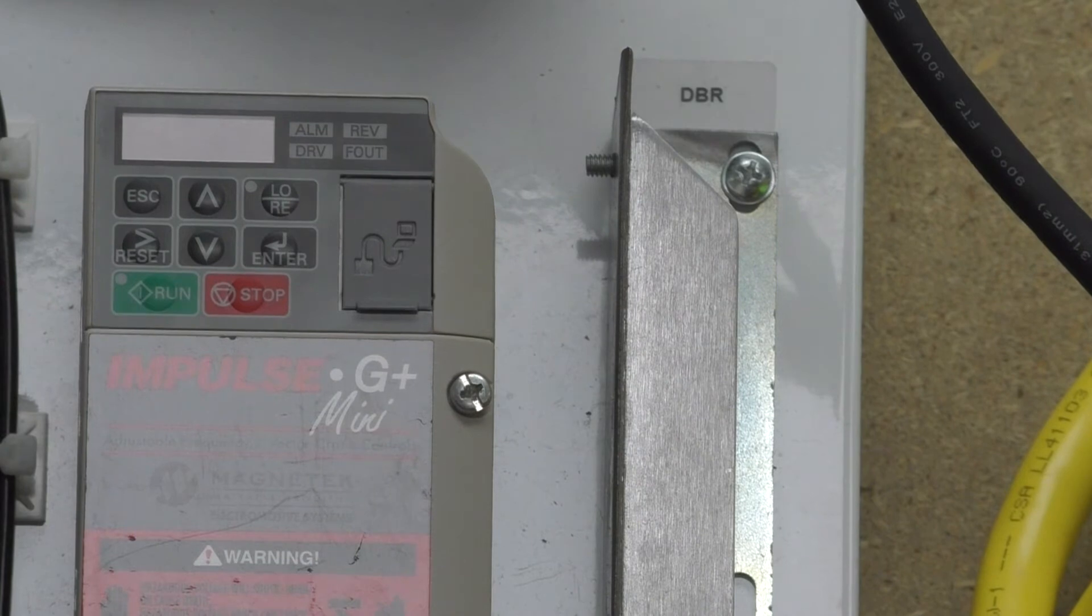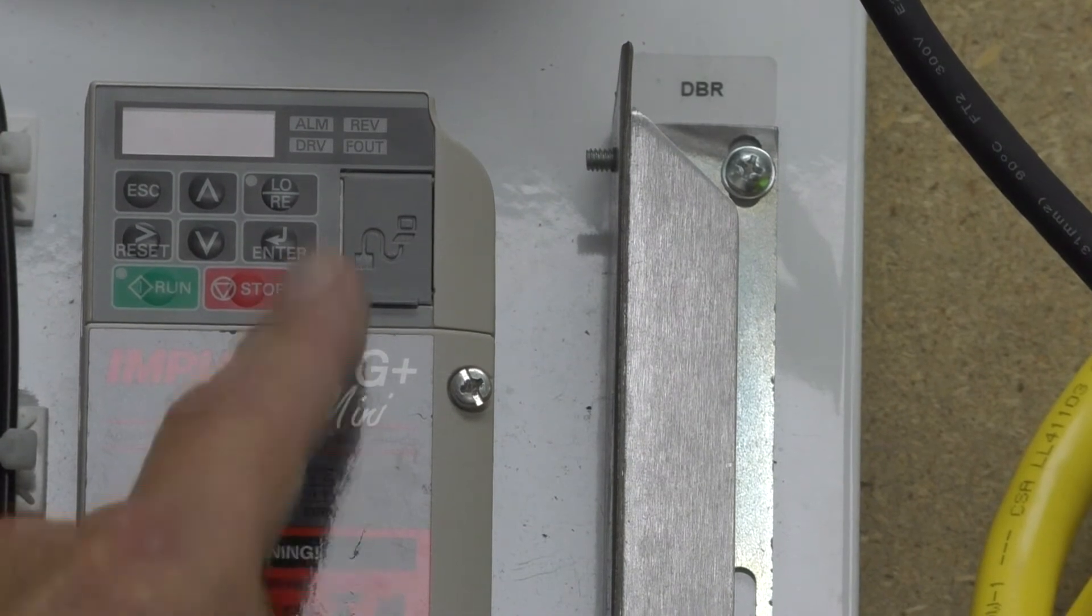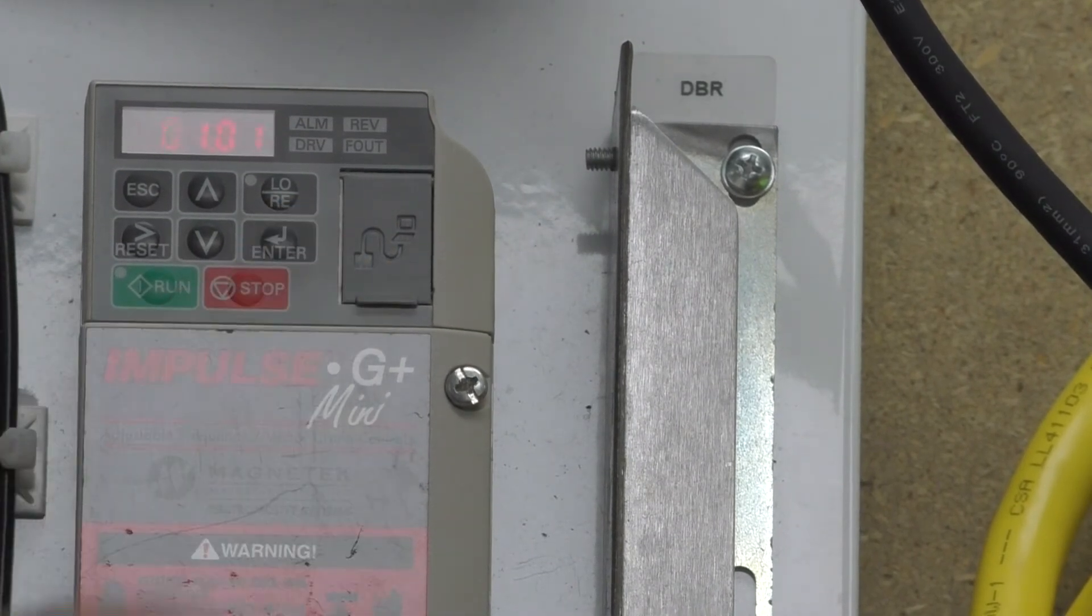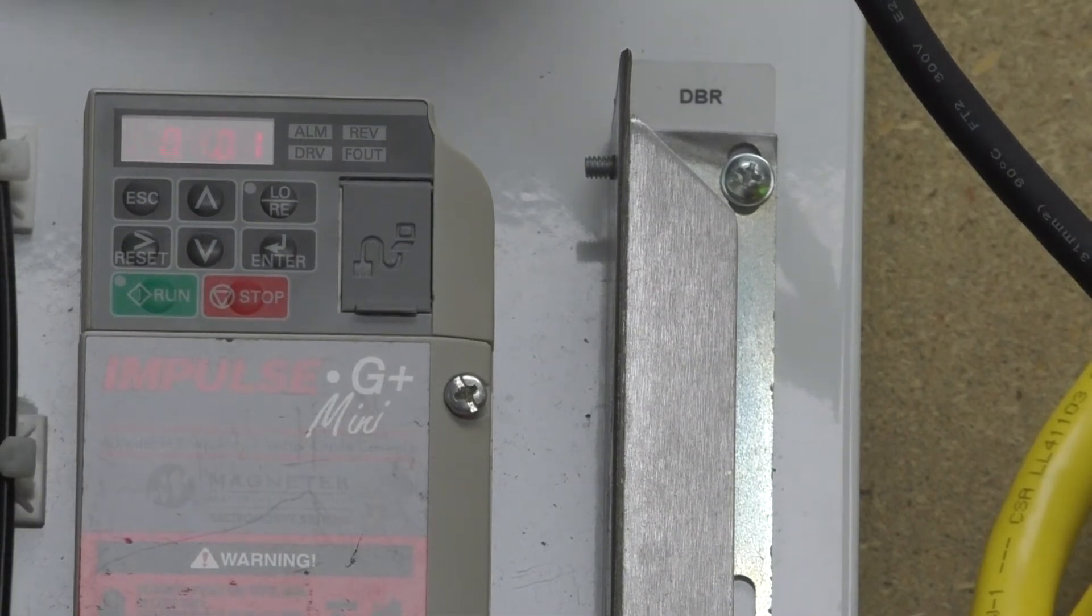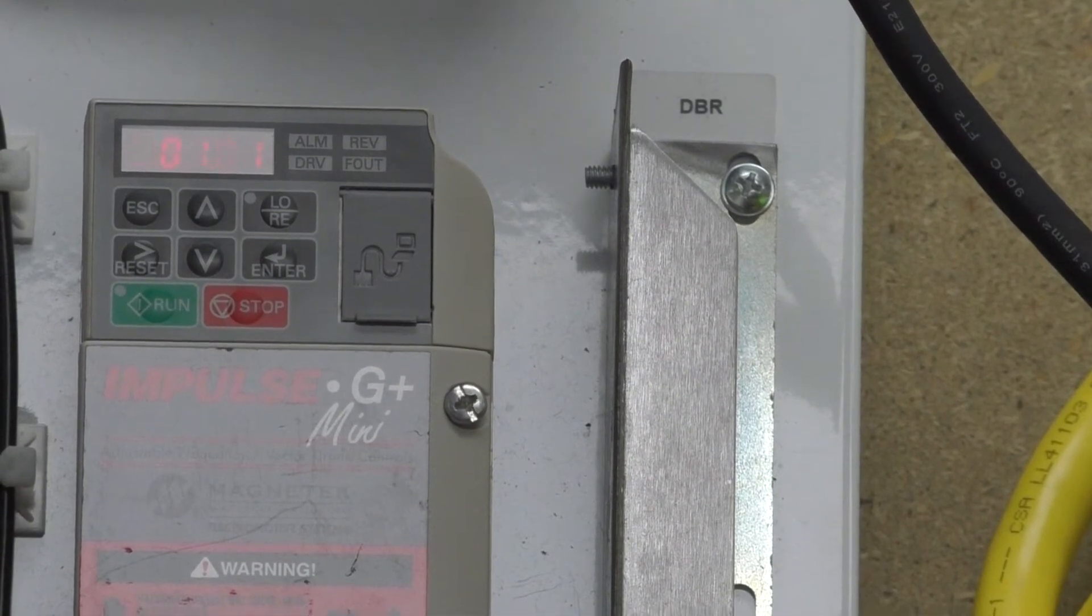Once you get to PAR parameters, you want to hit the enter button. Now on these particular inverters, whatever is flashing, you can change.